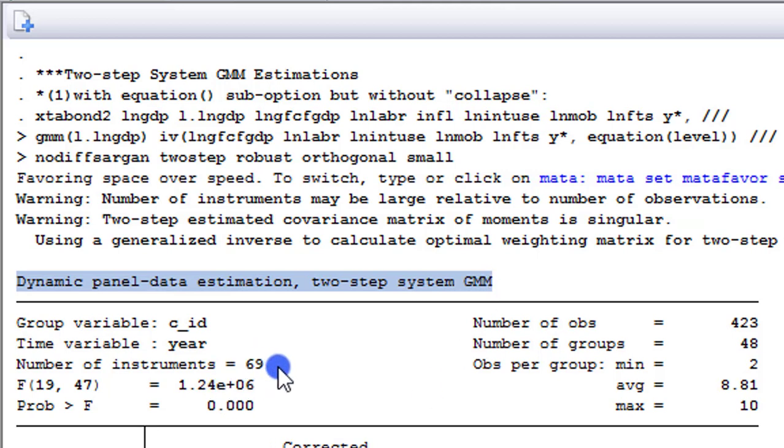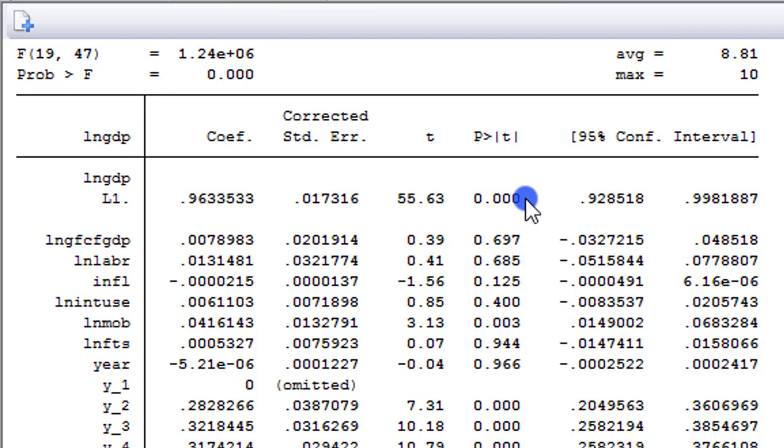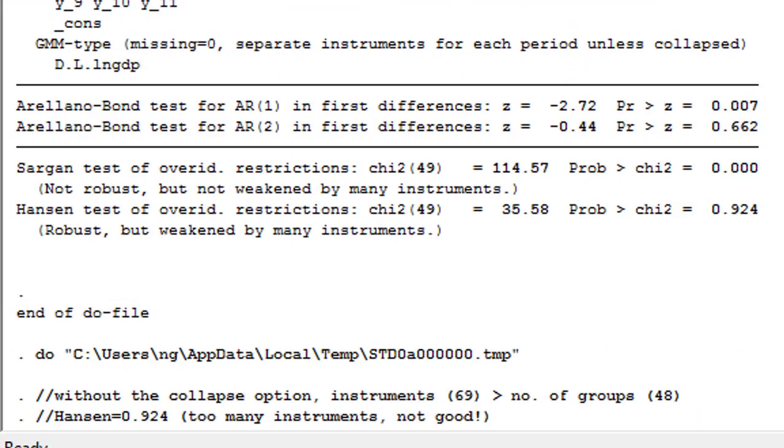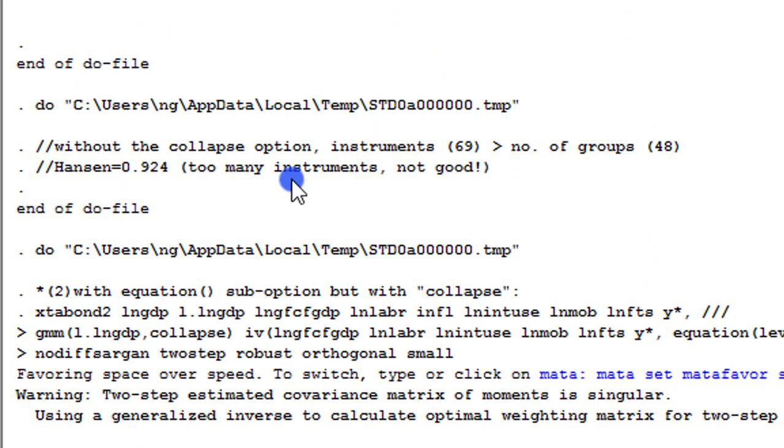So without your collapse option, as you can see, number of instruments higher than number of groups. This is not good at all, even though we have the lagged dependent variable significance, and one of my regressors also significant. And if you take a look at Hansen, it's exactly what you obtained under the one-step system GMM. AR2 is not so different from that too. And AR2 is always more important for you to consider than AR1. AR2 not significant tells you that your model does not suffer from second-order serial correlation. So because Hansen is 0.924, you have too many instruments, therefore this model is not good at all.